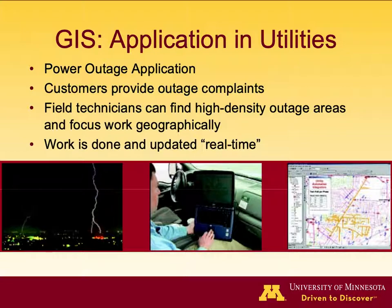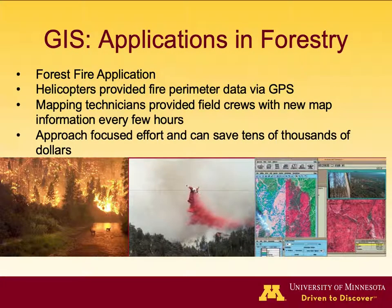Besides GIS application in precision agriculture, there are many other uses. In power outage mapping, field technicians can find high-density outage areas based on customer complaints and update results in real time. In forestry, helicopters can fly over to provide fire location and parameter data via GIS and GPS, and mapping technicians can provide field crews with updated map information every few hours, saving significant costs.